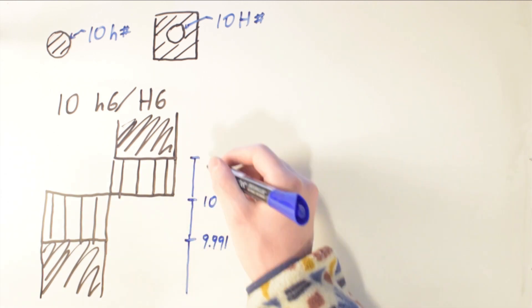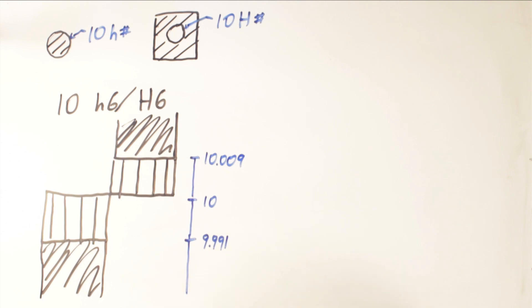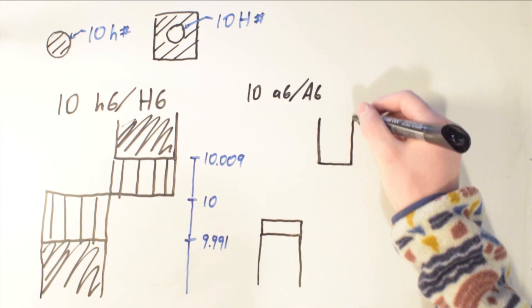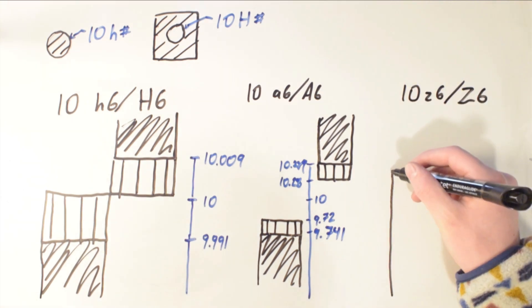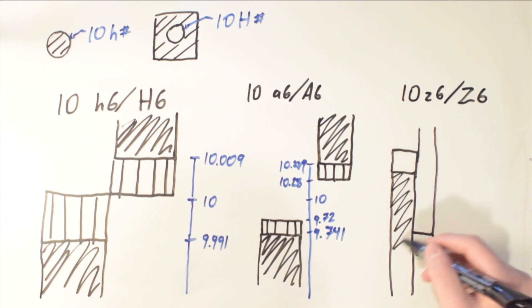Now the closer the letter is to the start of the alphabet, the lighter the part will be. Another example is a 10 millimeter A6 shaft will be 10 millimeters minus 2.8 minus 2.89, while a 10 millimeter A6 hole will be 10 millimeters plus 2.89 plus 2.8. Notice the symmetry in the tolerances. Now before you get too excited and think that the symmetry starts making sense, I'll give one more example.